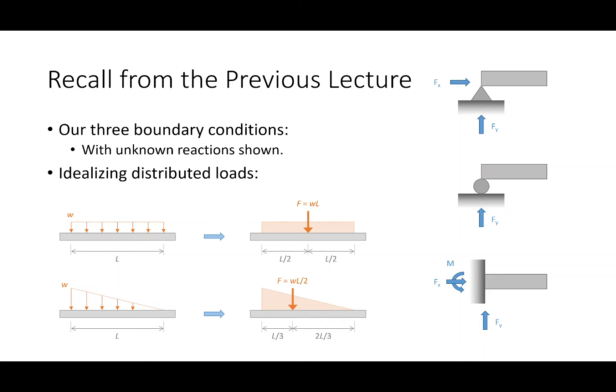Last time we were looking at our first foray into computational support reactions. We made sure we were comfortable with the three external support reactions for pins or hinges, rollers, and fixed boundary supports. We also learned how to deal with concentrated loads and distributed loads. The two distributed loads we looked at were uniformly distributed loads — treated as a rectangle — and triangular loads, which we treat as a triangle, a linearly distributed load.